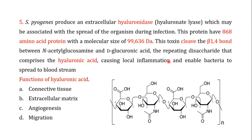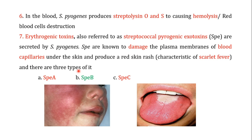Hyaluronic acid is a very important component of connective tissue and the extracellular matrix in humans, keeping cells intact with each other. When this enzyme cleaves the hyaluronic acid, it causes local inflammation and provides an entry site for the bacteria to spread into the bloodstream. This is another important virulence factor of S. pyogenes.